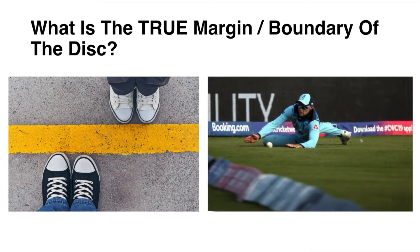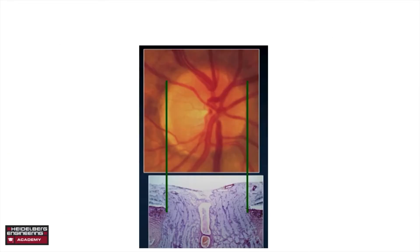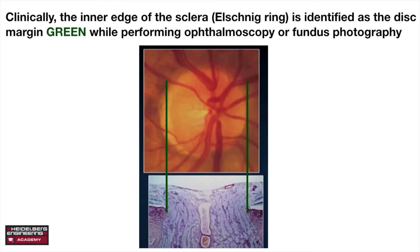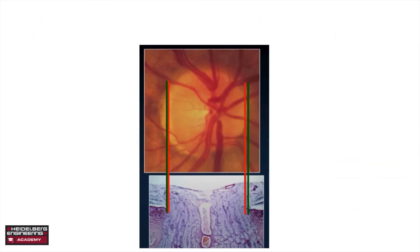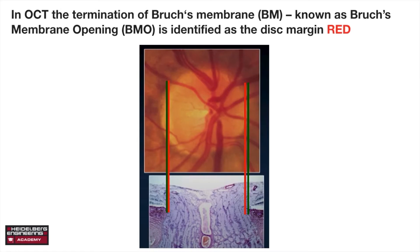What is the true margin of the optic disc? Clinically, the inner edge of the scleral ring — the Elschnig ring — is identified as the disc margin, depicted by the green line while performing ophthalmoscopy or fundus photography. Whereas in OCT, the termination of Bruch's membrane, known as the Bruch's membrane opening, is identified as the disc margin, depicted by the red line.